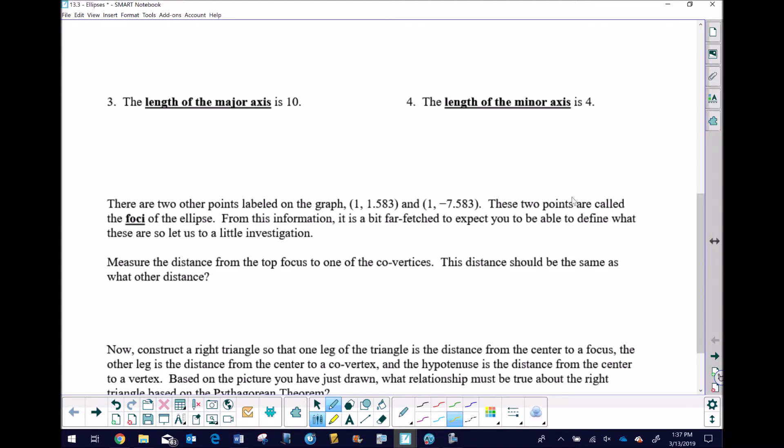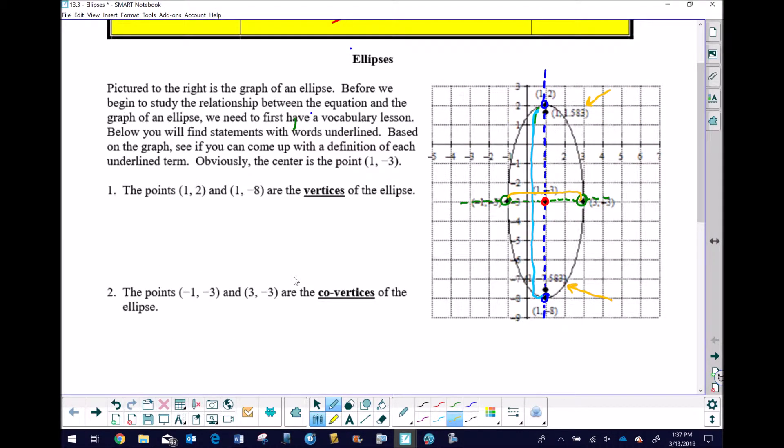From the information, it is a bit far-fetched to expect you to be able to define what these two are, so we're going to leave it to a little investigation. If you're watching this video at a different school, you may have seen a teacher do something kind of interesting with a piece of string. I'm going to be doing that with my class in a few days, but there's a lot of neat ways that you can define these foci points. So it says measure the distance from the top focus to one of the co-vertices. It says this distance should be the same as what other distance. So let's return to this picture, and I've done a pretty good job of messing this picture up, so I am going to erase everything, start with a clean slate, and we are going to actually find the distance from one foci to the next.